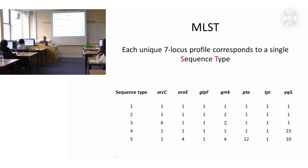Sequence type three would be a double locus variant because it has two differences. But sequence type three would be a single locus variant of number two. If you were to make a tree of this, some would be more closely related to each other than others — for example, this one, which is a quadruple or quintuple locus variant of one.